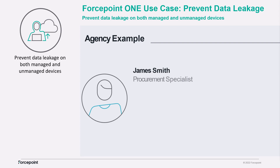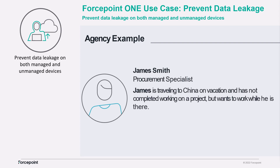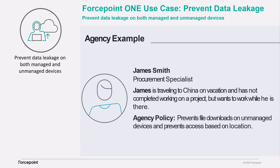Meet James. James is a procurement specialist working on an important project. He's going on vacation to China and needs to complete a few tasks while he's out. The agency — let's call it Agency X — has adopted a policy that prevents file downloads on unmanaged devices and prevents access based on where a person is located.